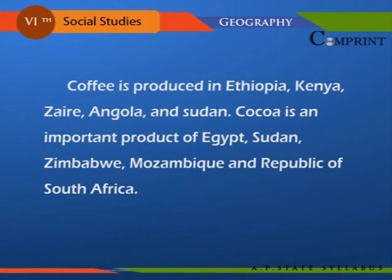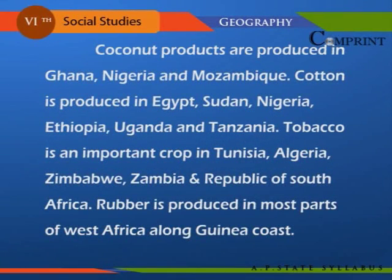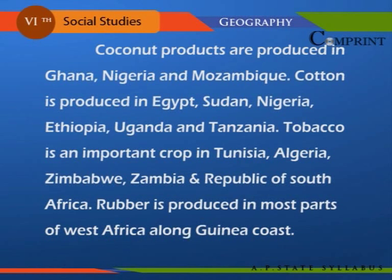Corn is largely produced in Congo, Angola, Kenya, and Egypt. Date palms are produced in Cameroon and Nigeria. Coffee is produced in Ethiopia, Kenya, Angola, and Sudan. Cocoa is an important product of Sudan, Zimbabwe, Mozambique, and the Republic of South Africa. Coconut products come from Ghana, Nigeria, and Mozambique. Cotton is produced in Egypt, Sudan, Nigeria, Ethiopia, Uganda, and Tanzania. Tobacco is an important crop in Tunisia, Algeria, Zimbabwe, Zambia, and the Republic of South Africa. Rubber is produced in most parts of West Africa along the Guinea Coast.